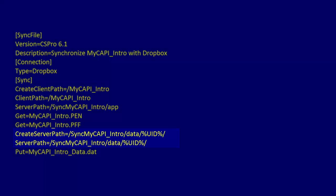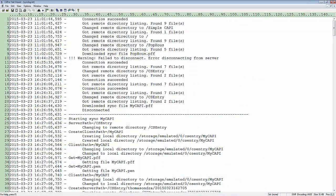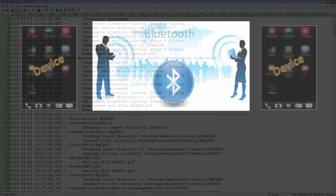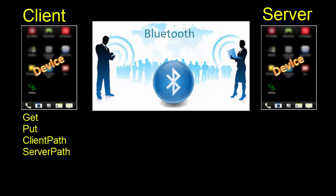If you ever have problems with synchronization, you can view the SyncLog.txt file in the CSEntry directory. This file contains a detailed log of all files transferred and all errors encountered during synchronization. Using synchronization, you can exchange files between phones and tablets using Bluetooth even without an internet connection. In this scenario, one device takes the role of server and the other is the client. Only the client issues get, put, client path, and server path commands.